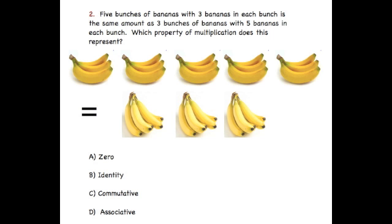5 bunches of bananas with 3 bananas in each bunch is the same amount as 3 bunches of bananas with 5 bananas in each bunch. Which property of multiplication does this represent?